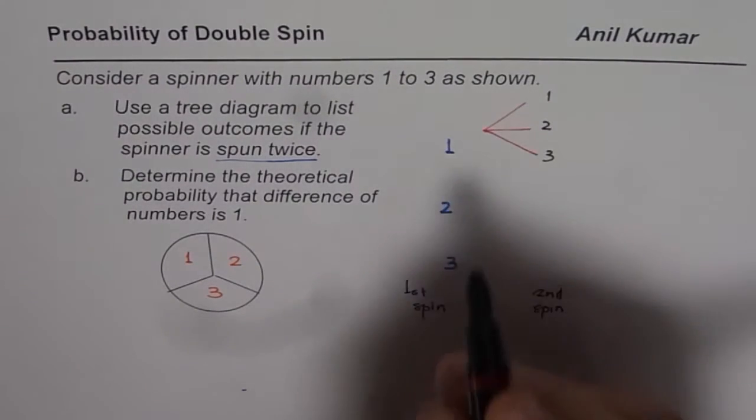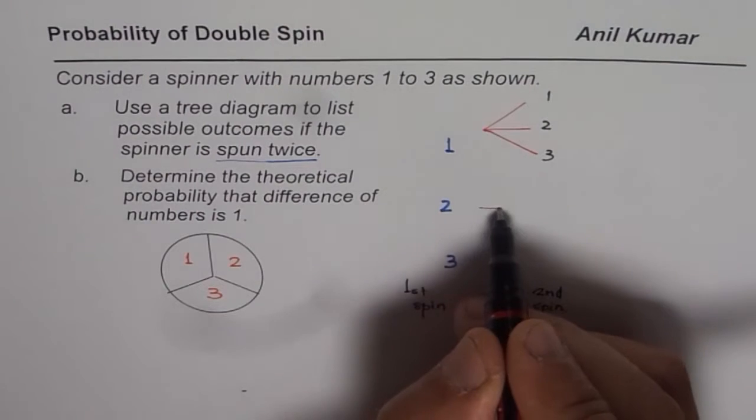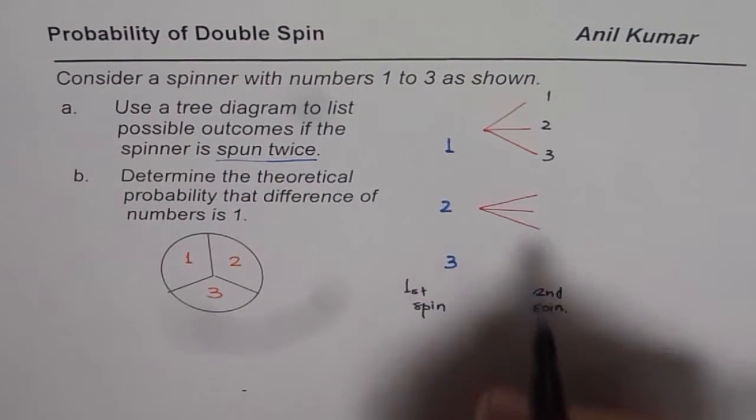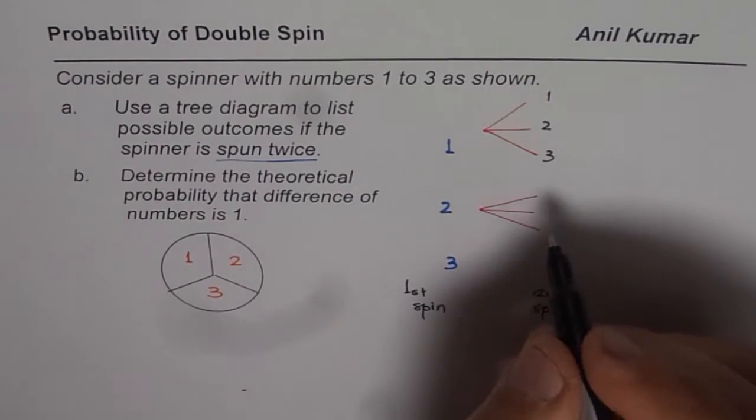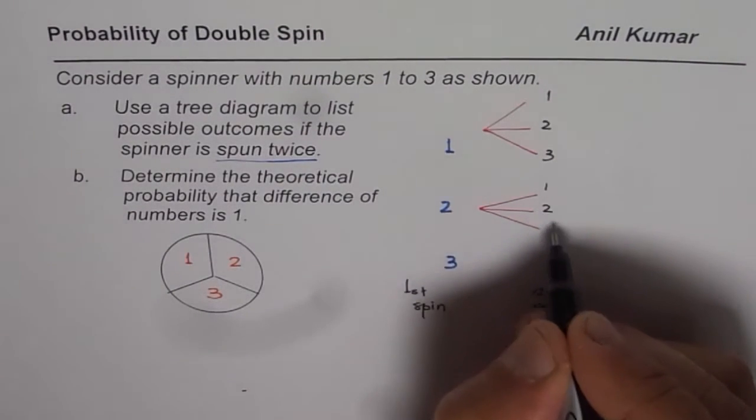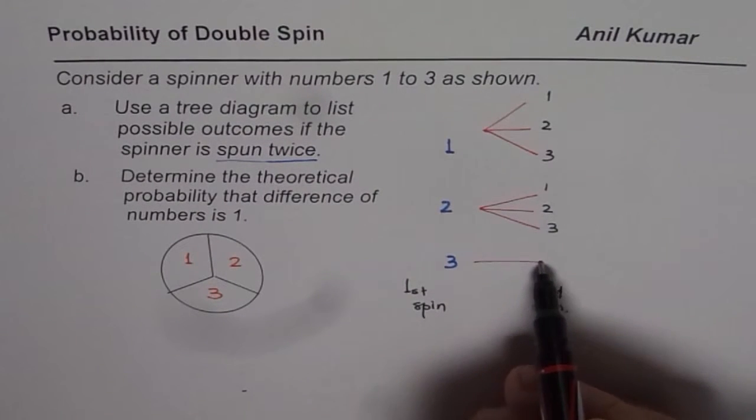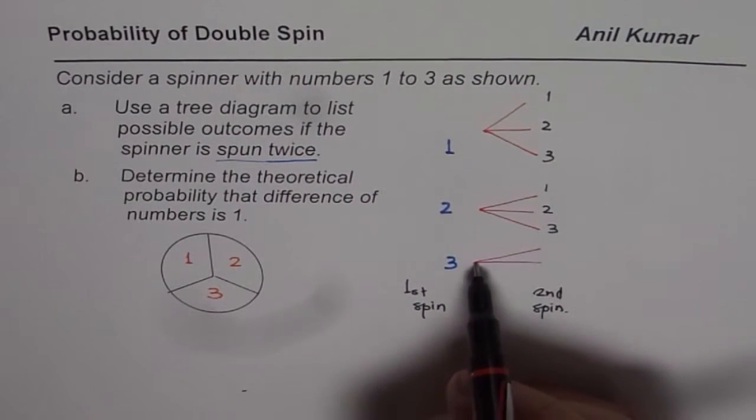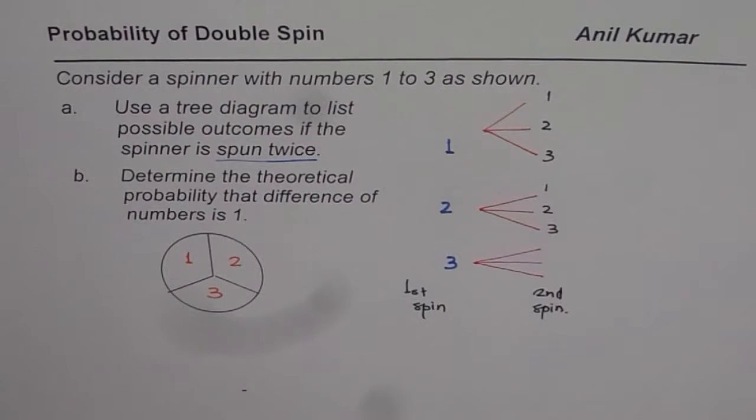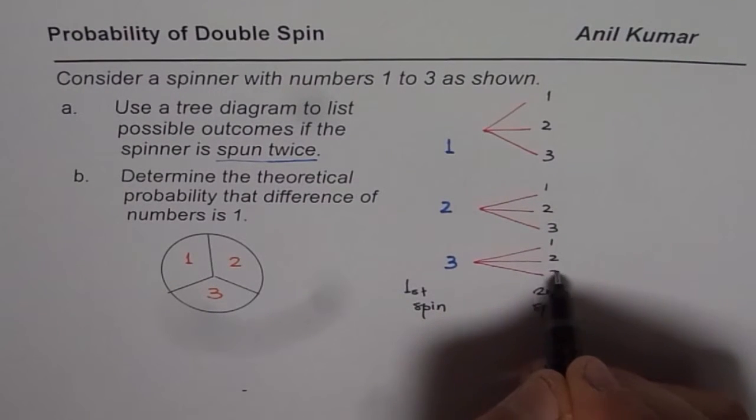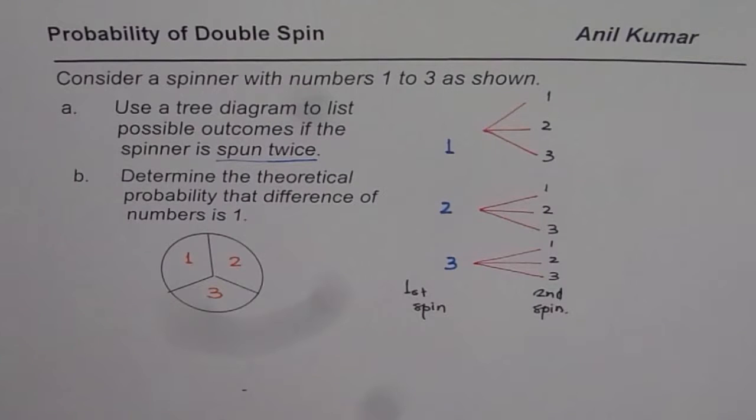Similarly, if we would have got 2 in the first spin, then also we have the possibility of getting 1, 2 or 3. So we could get 1, 2 or 3. For the second spin, again we have 3 outcomes, 1, 2 or 3. Do you see that? 1, 2 or 3.